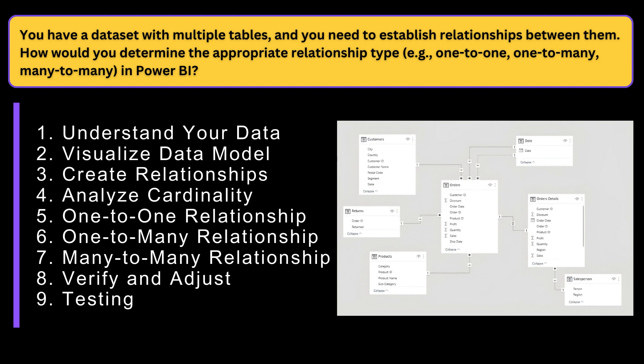The third point is to create the relationships. Based on your understanding of the data, create relationships between tables by dragging the primary key from one table to the corresponding foreign key in another table. Go to the model view and drag the field from one table to another table — that is how you create the relationship between the tables.